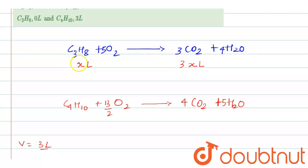If X liters of propane is present, what is the volume of butane will be? It will be 3 minus X liter. Why 3 minus X? Because total volume of the mixture was 3 liters.